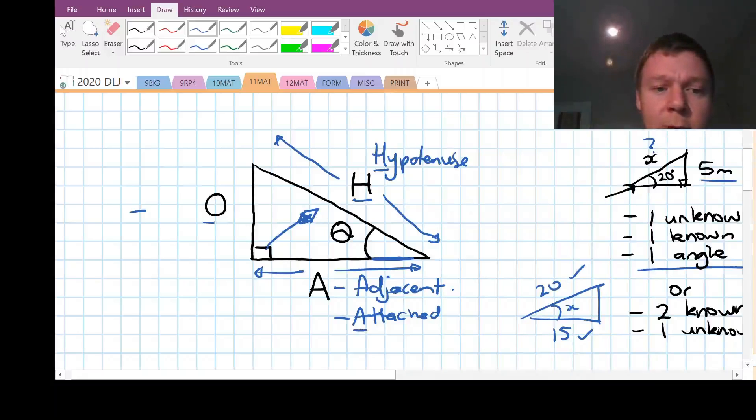And it's not a zero on the other side, it's an O. So O for opposite, opposite the angle. So it's the direct opposite for the angle.